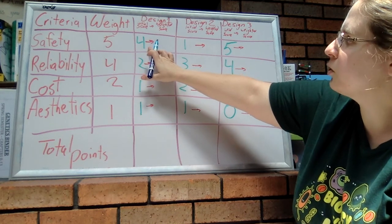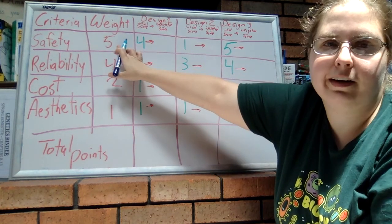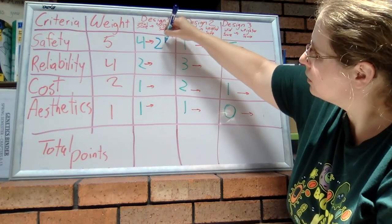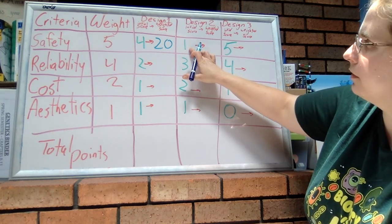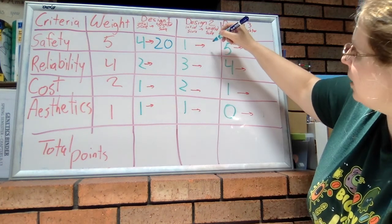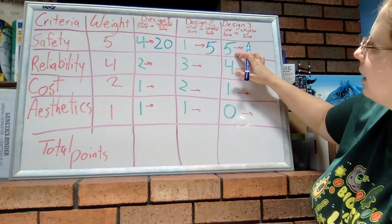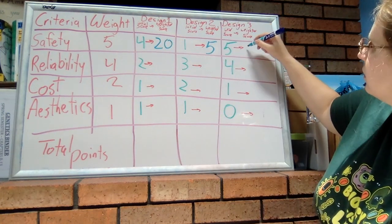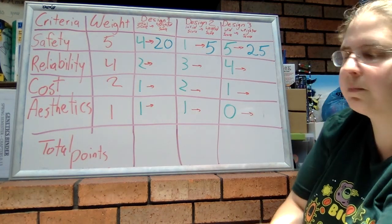So design one had an initial score of four for safety, so four times a weight of five gives us 20. For design two, one initial score times a weight of five is five. And design three got a five times a weight of five, which is 25. Not too bad, right?